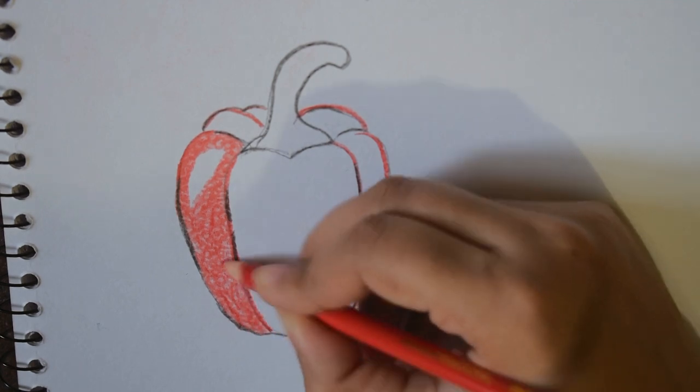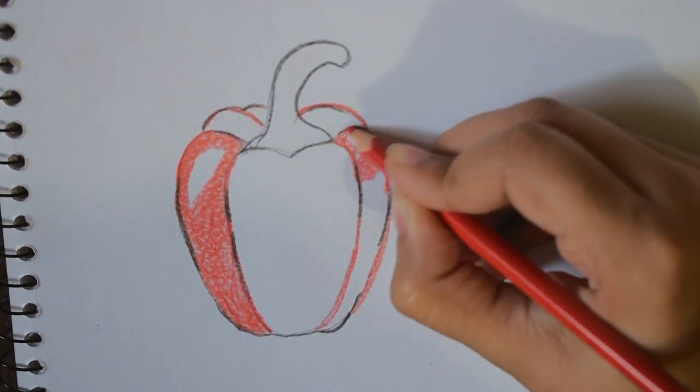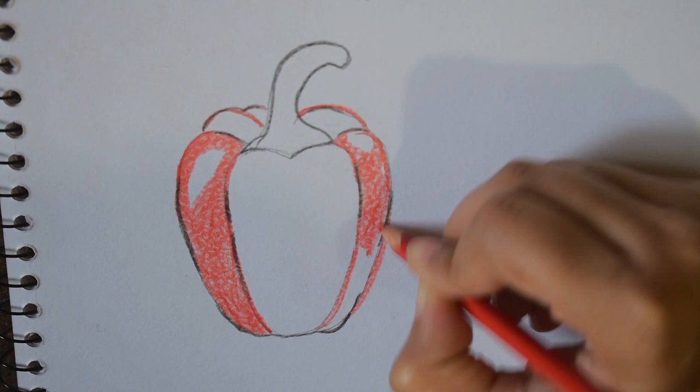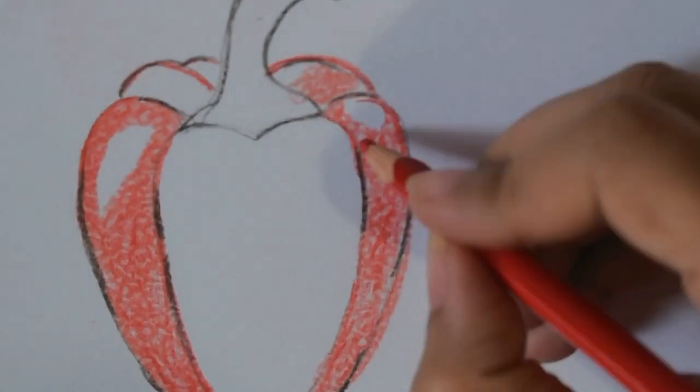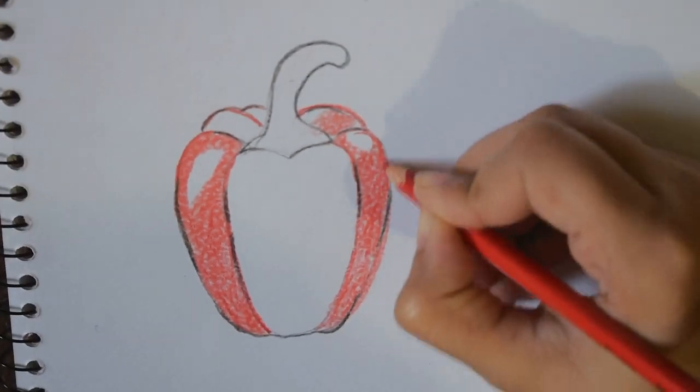For shading, I'm going into circular motions and I'm giving lighter to medium pressure so that it fills up the space like this. This is red, I don't know the exact name, but this is red.